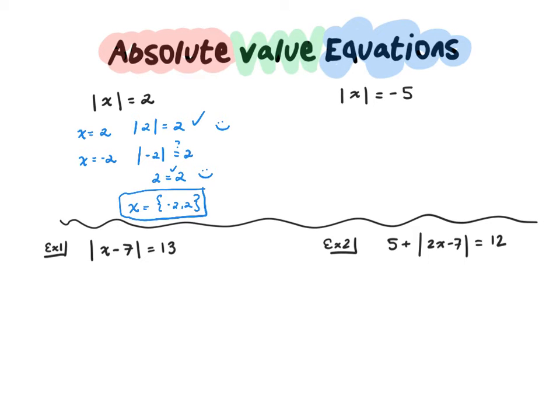So with absolute value, you have to consider the fact that what's inside the absolute value could equal the positive version of the result or the negative.